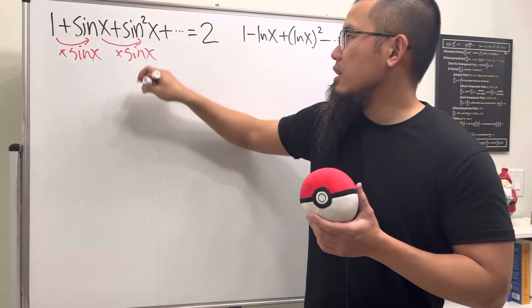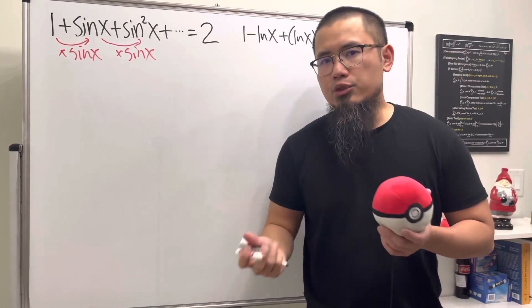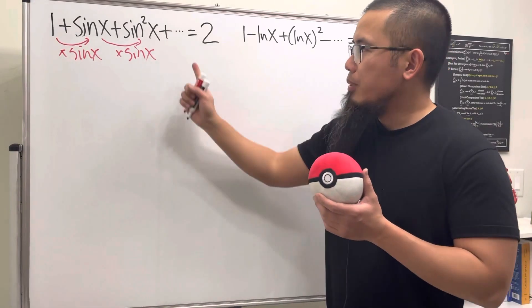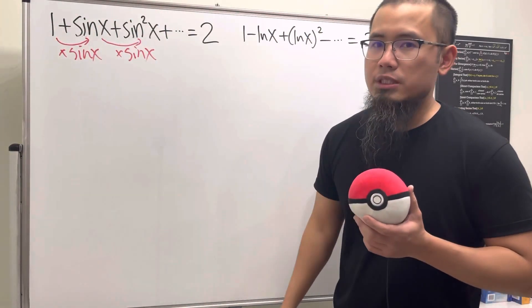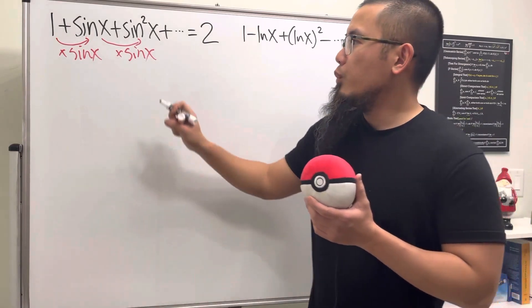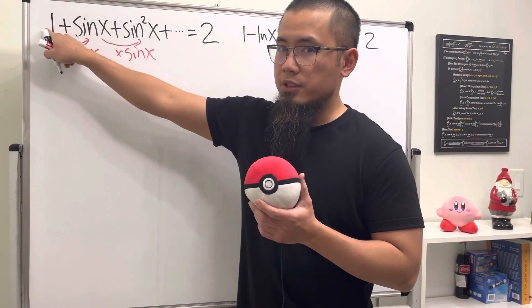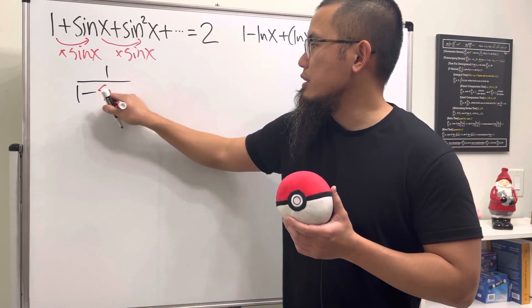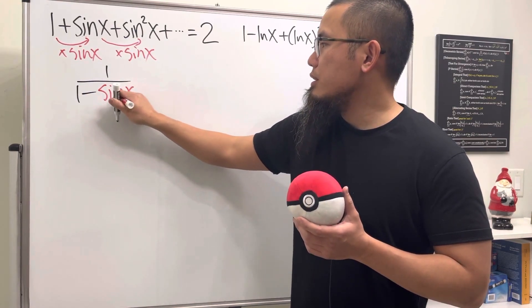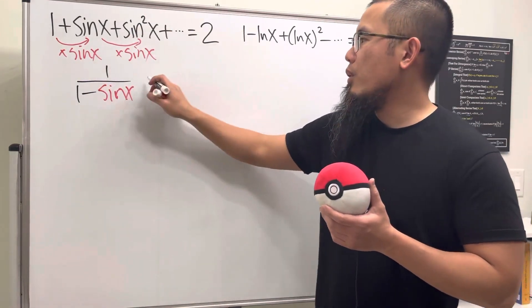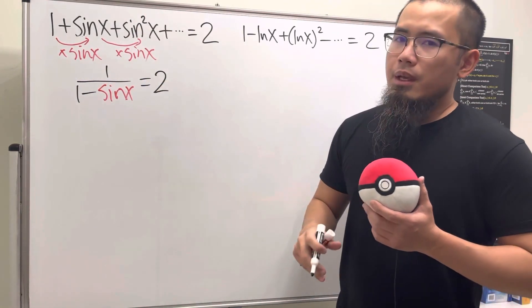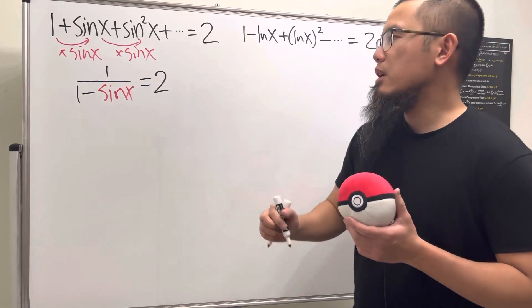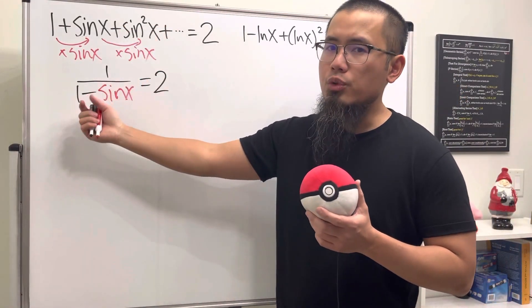Therefore, sin x is actually just a common ratio, and suppose this infinite geometric series does converge. We know that it will converge to the first term, which is one, over one minus the common ratio, which is just sin x. And you see that we just have to make this equal to two.